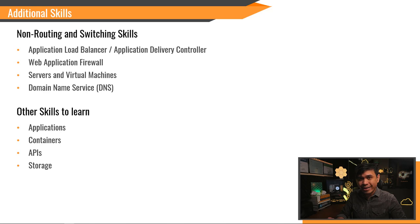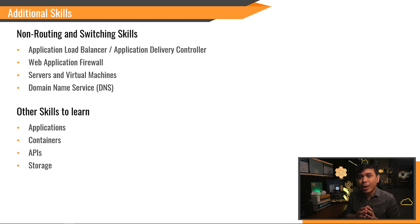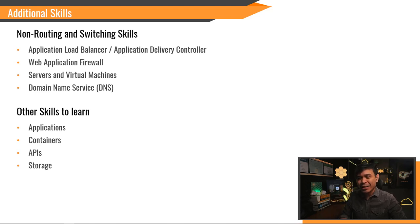These are other skills to learn — not mandatory, but very advantageous. First, web applications, because in AWS, most of the applications are web-based. Second, containers such as Docker and Kubernetes. Next, APIs — application-based, network-based, and storage APIs. As a network engineer, it's advantageous if you already know the basics of APIs and are familiar with network-based APIs. For storage, sorry for data center network engineers specializing in storage networking — technologies like FCoE, iSCSI, FC, and storage-specific switches will not be needed in the cloud.